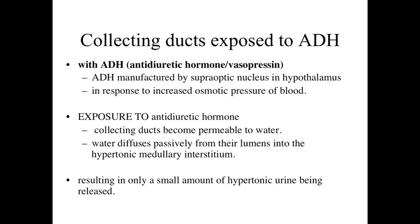The important thing we're going to look at are the principal cells and their response to ADH. ADH — antidiuretic hormone, also known as vasopressin — is manufactured by the supraoptic nucleus within the hypothalamus, and it's produced in response to osmotic pressure within the bloodstream. In the presence of ADH, these principal cells of our collecting ducts become permeable to water, meaning water is able to flow from the lumen — from that filtrate passed through the nephrons — into the hypertonic medullary interstitium, and then transported through the blood vessels there.